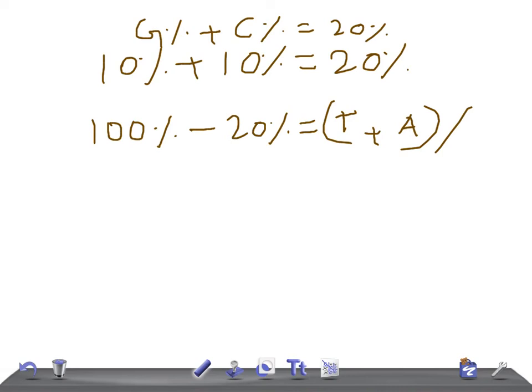So now, T plus A equals 80%. But we know that according to Chargaff's rule, percentage of T equals percentage of A. So it should be 40% plus 40% equals 80%.